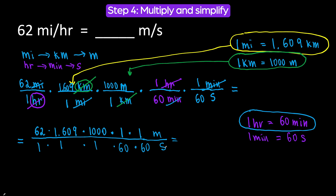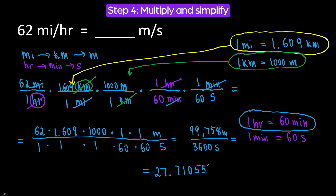Do things carefully so we don't make any mistakes. When we multiply the numbers in the numerator, we get 99,758 meters over, when we multiply the numbers in the denominator, we get 3,600 seconds. Now we divide the numerator by the denominator: 99,758 divided by 3,600 gives us 27.71055556 meters per second. But let's round to the nearest tenths. The digit to the right is 1, which is less than 5, so we round to 27.7 meters per second.